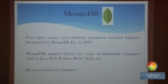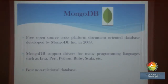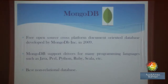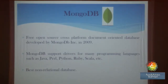MongoDB is a free, open-source, cross-platform, document-oriented database. It was developed by MongoDB Inc. in 2009 — originally the company was called 10gen and later renamed MongoDB Inc. It supports drivers for many popular programming languages including Java, Perl, Python, Ruby, and Scala. As per 2015 rankings, MongoDB is one of the best non-relational databases, alongside Cassandra.